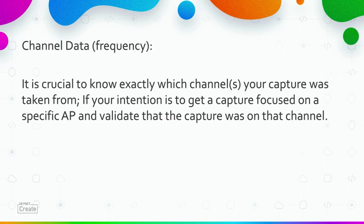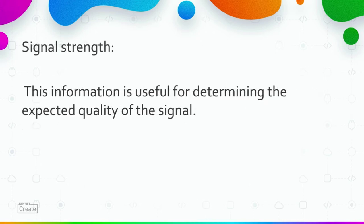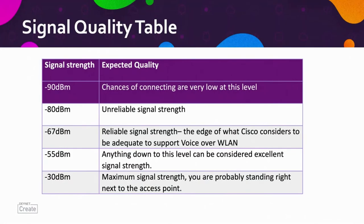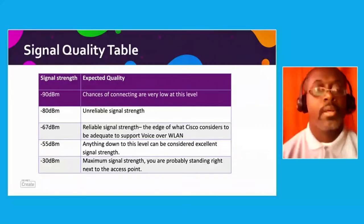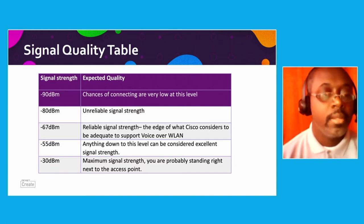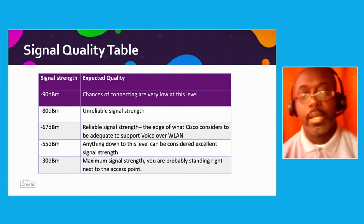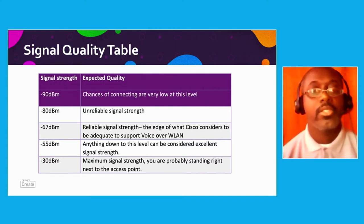Data rate: to understand why data and transmission don't always make it from a transmitter to a receiver, you must know what data rates are being used. Signal strength: this information is useful for determining the expected quality of the signal. The signal quality table shows a range of signal strength and expected qualities — negative 55 dBm and anything down to this level can be considered excellent signal strength.